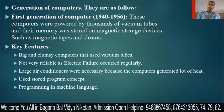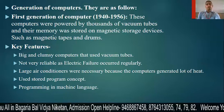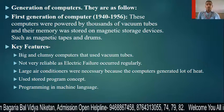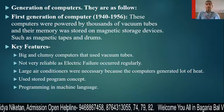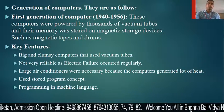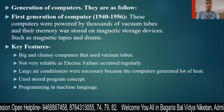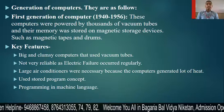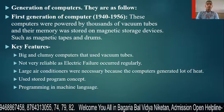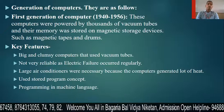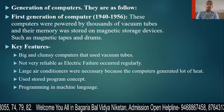Welcome back to BBVN online classes. Today the topic is a generation of computers. Each phase of computer development is known as a separate generation of computer. The first generation, approximately 1940 to 1956, these computers were powered by thousands of vacuum tubes and their memory was stored on a magnetic storage device such as magnetic tape and drums.